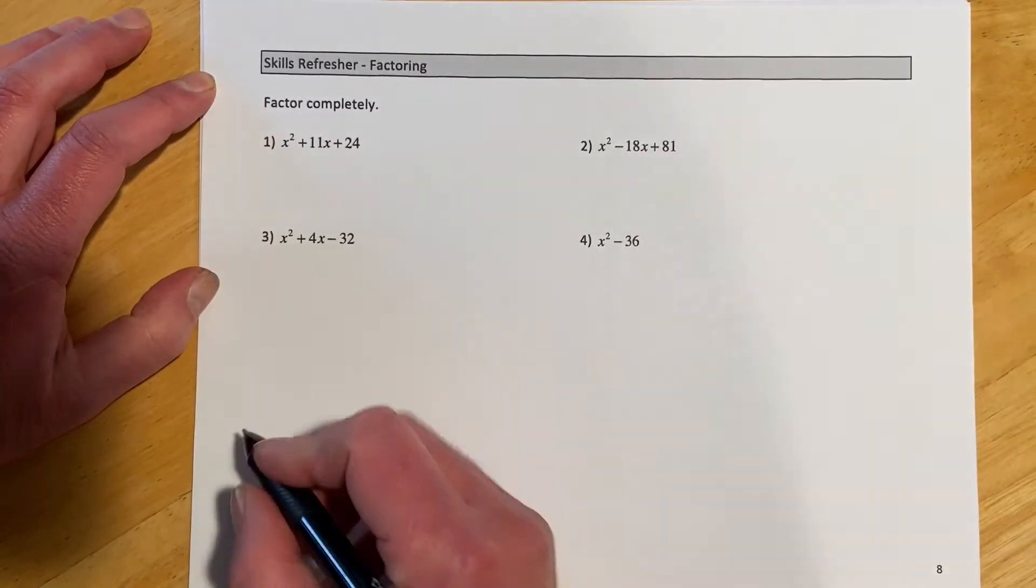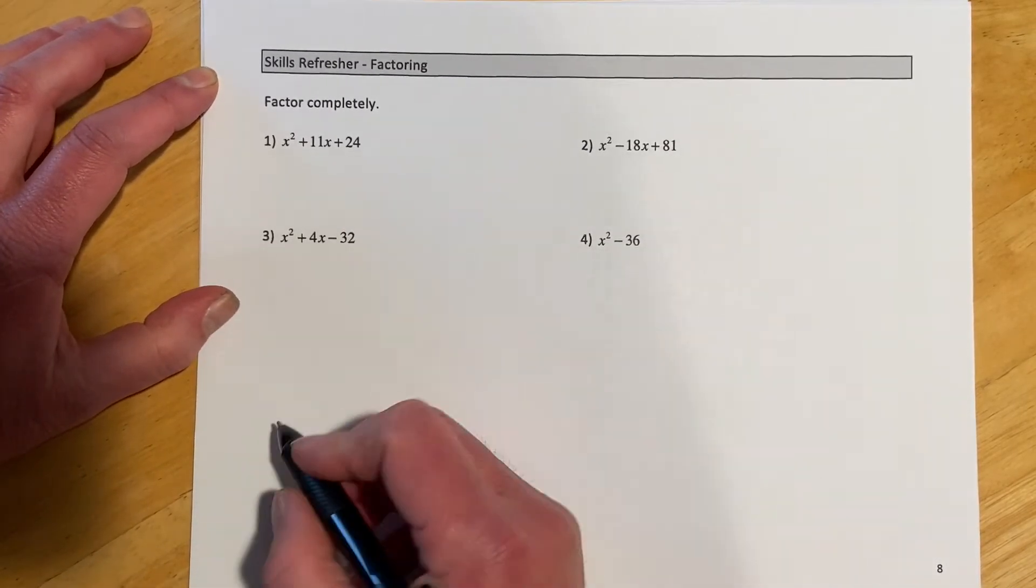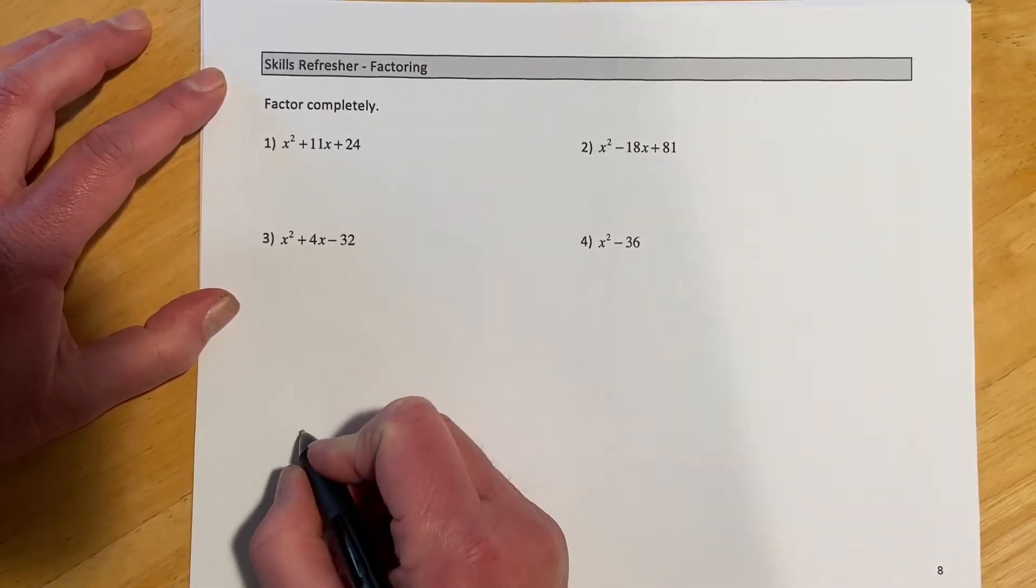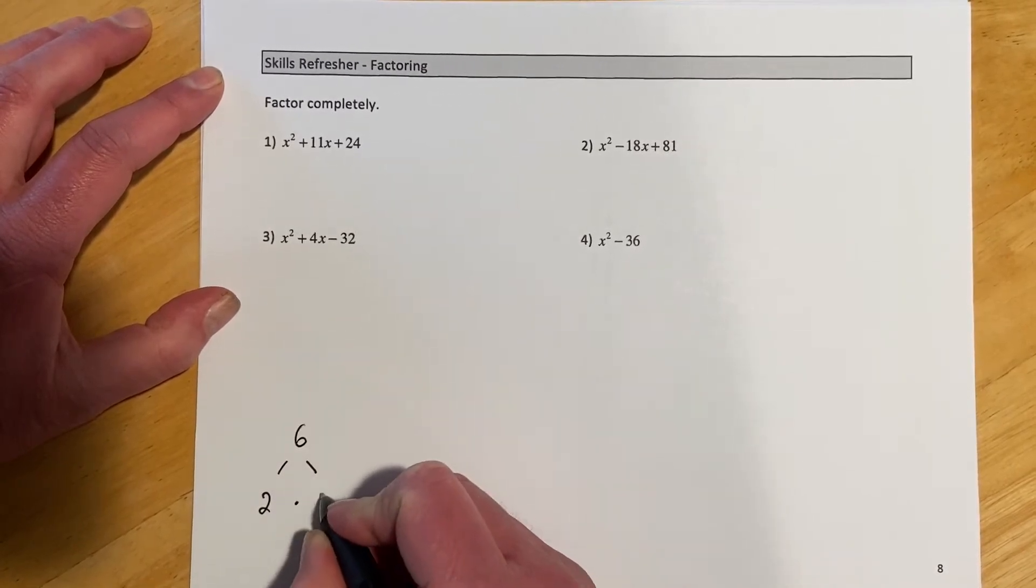So what factoring is is it's basically the opposite of FOIL. If you think of having say six, I can factor that down to two times three.